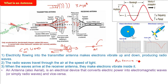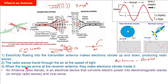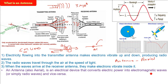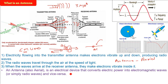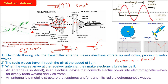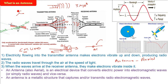The radio waves travel through the air at the speed of light. An antenna is also called an aerial. When the waves arrive at the receiver station, they make electrons vibrate inside it. An antenna, also called an aerial, is an electrical device that converts electrical power into electromagnetic waves — simply called radio waves — and vice versa. This is very important because an antenna is both a transmitter and a receiver.